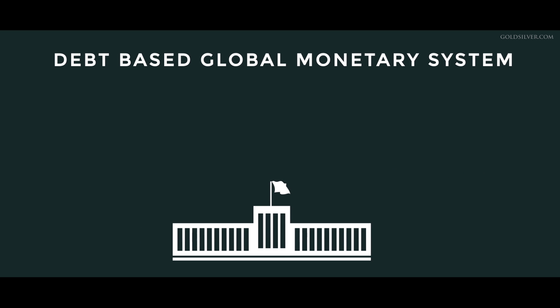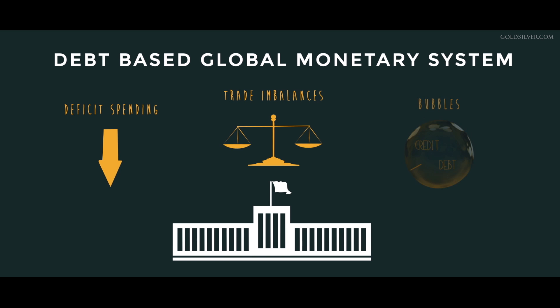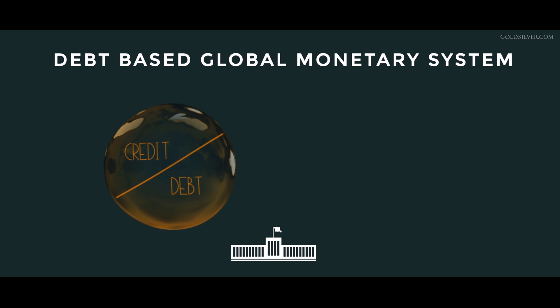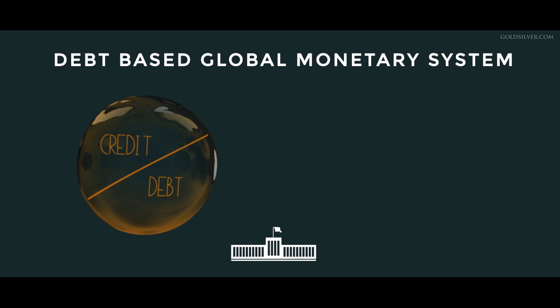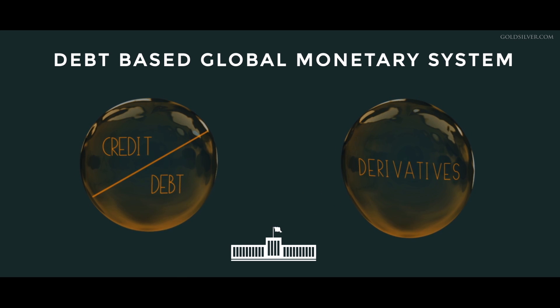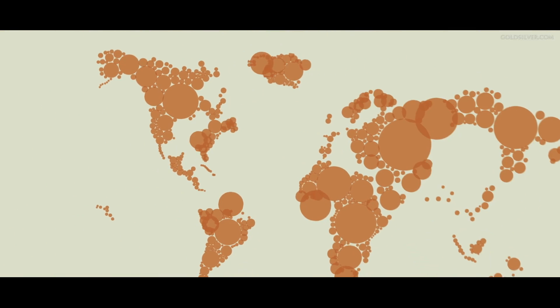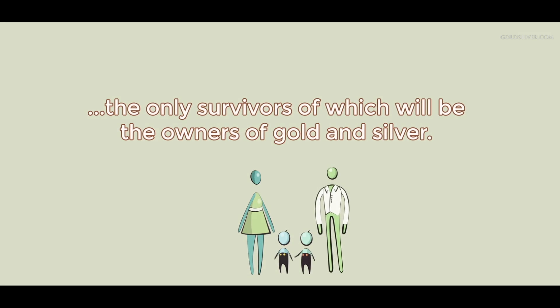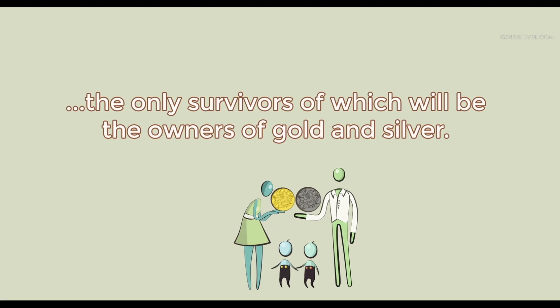But the debt-based global monetary system has allowed deficit spending, trade imbalances, and bubbles to persist and balloon to levels unprecedented in all of history. The credit-debt bubble and the derivatives bubble threaten to take down the world economy. The only comparison would be to take every great bubble in history times one million and have it burst everywhere on the planet simultaneously. It threatens to be a global financial nuclear holocaust, the only survivors of which will be the owners of gold and silver.